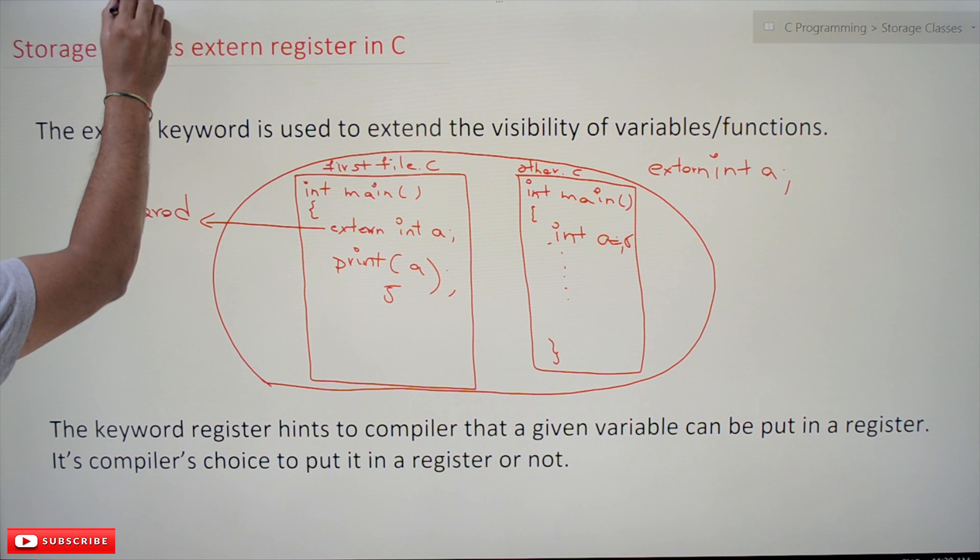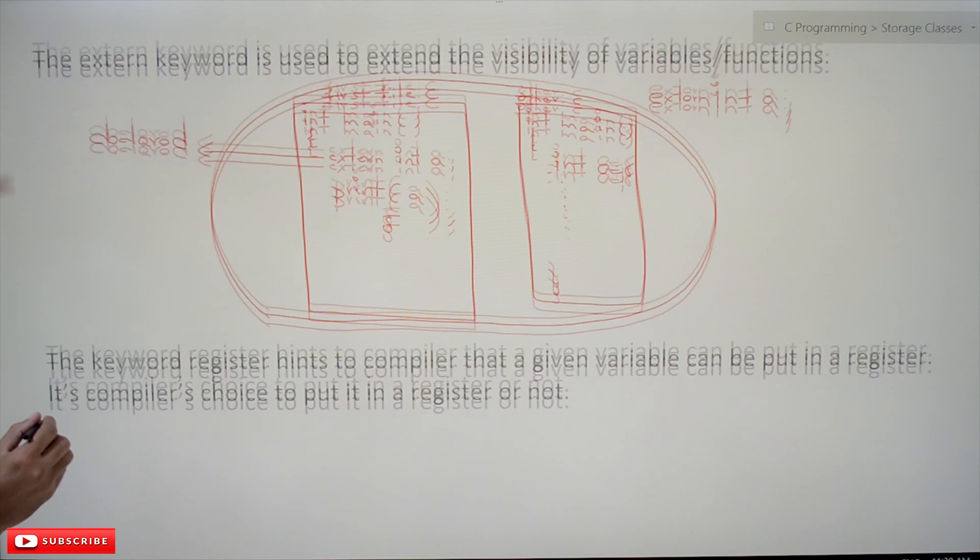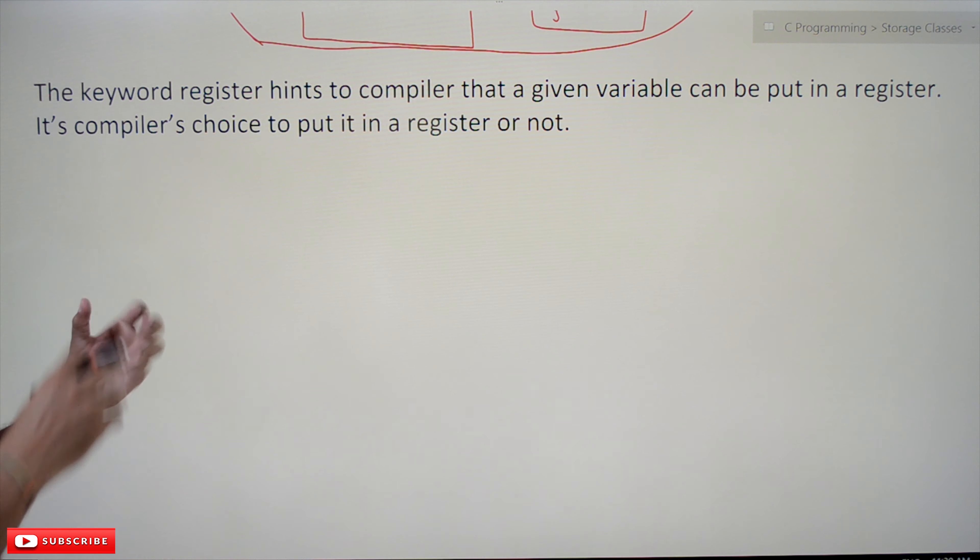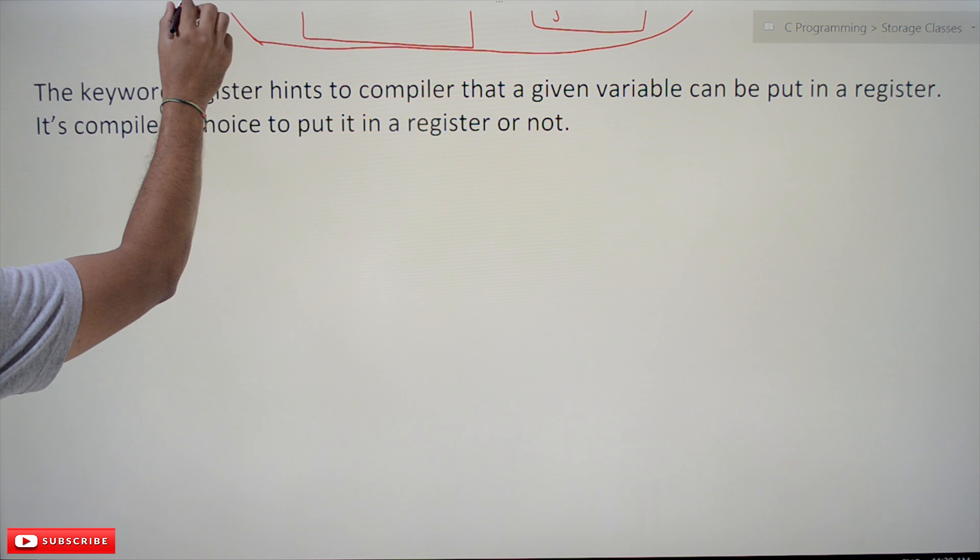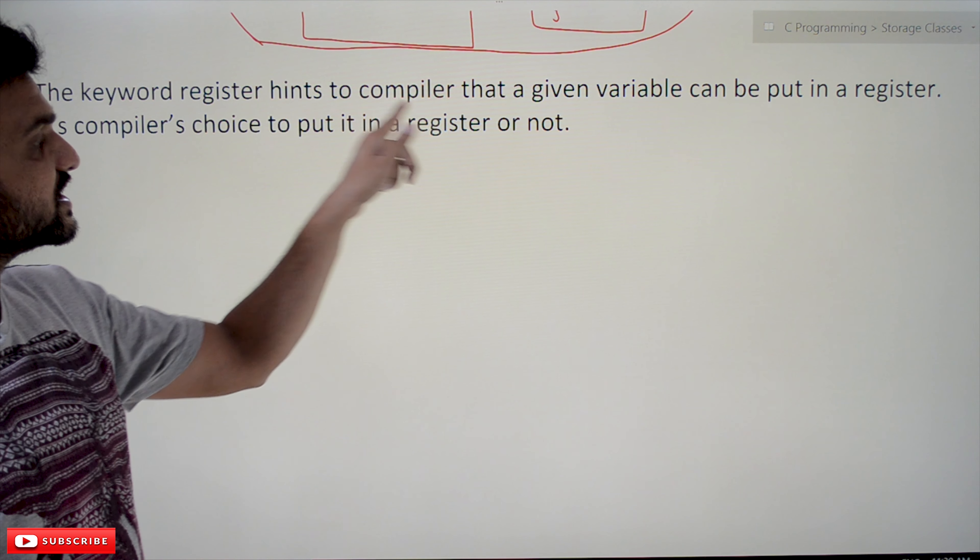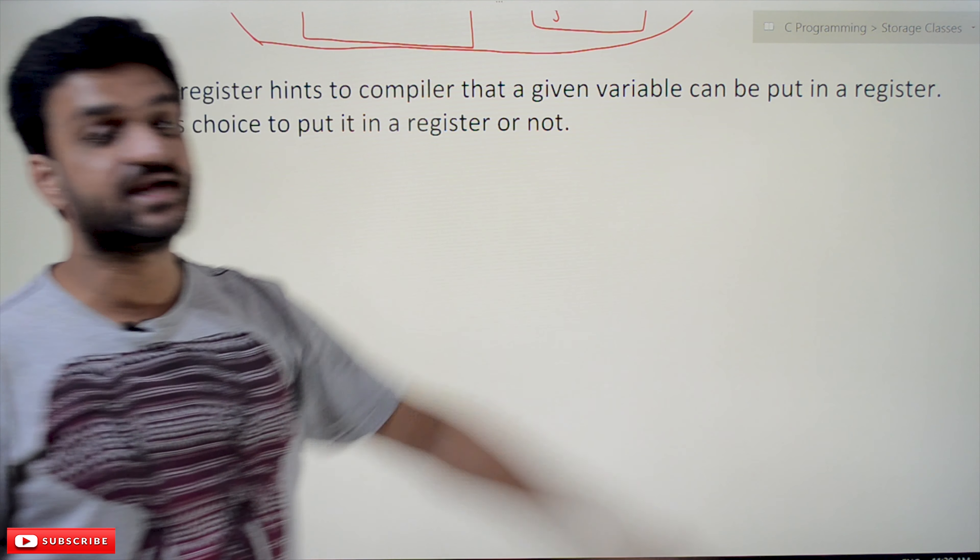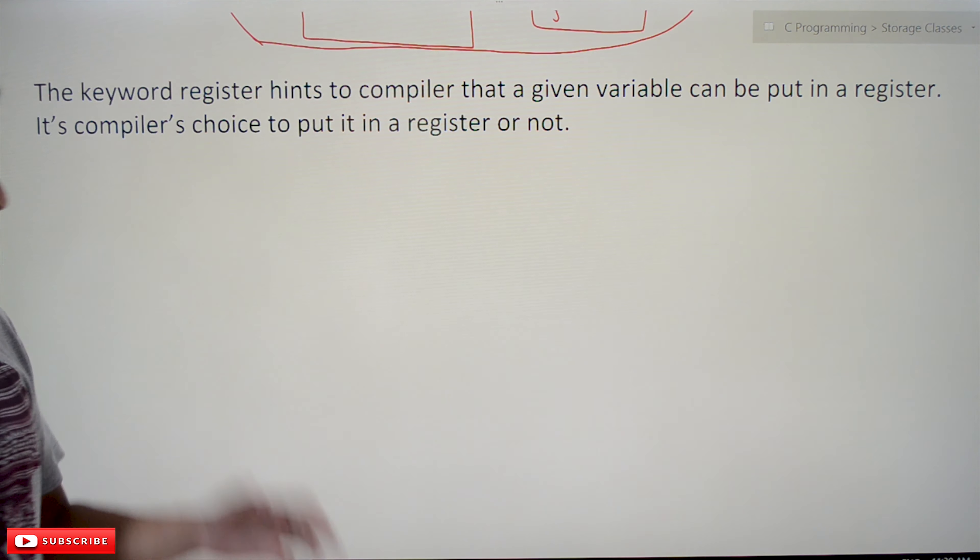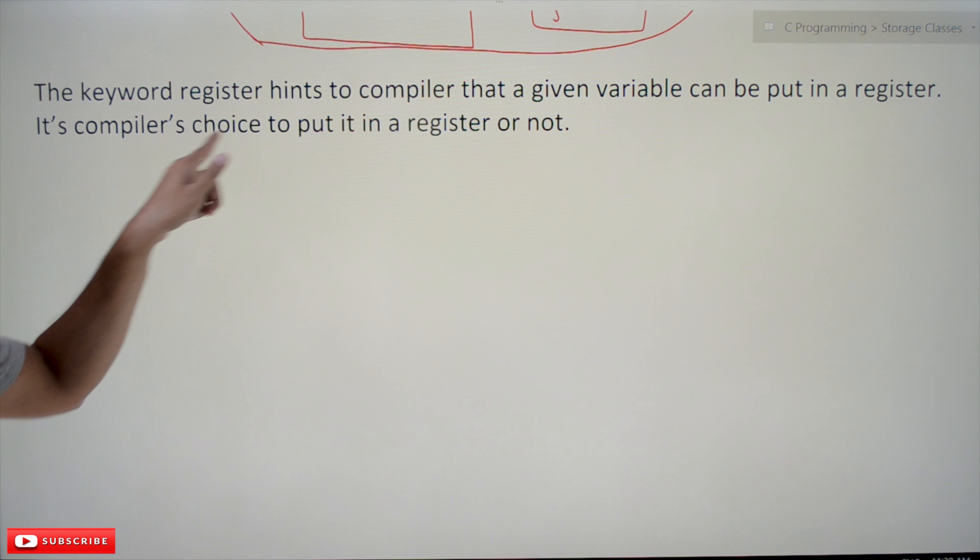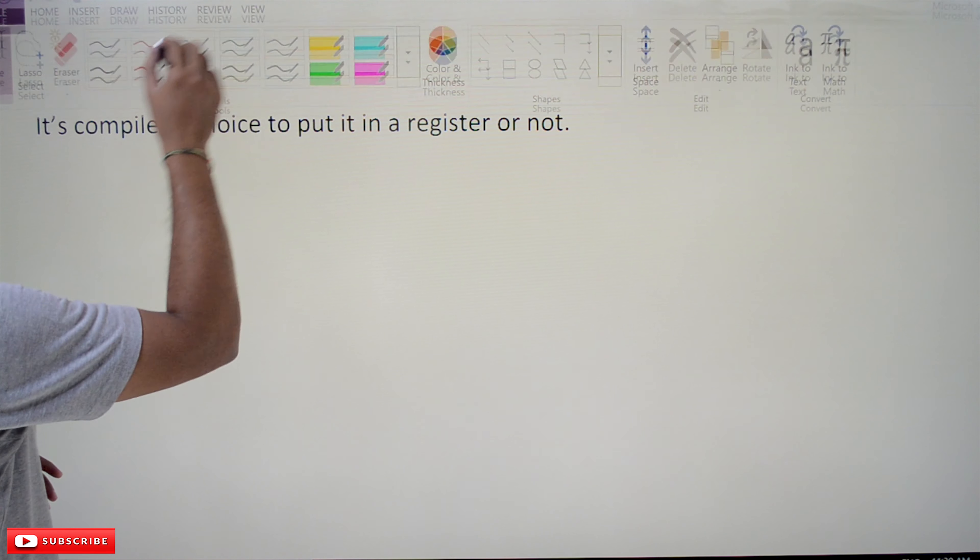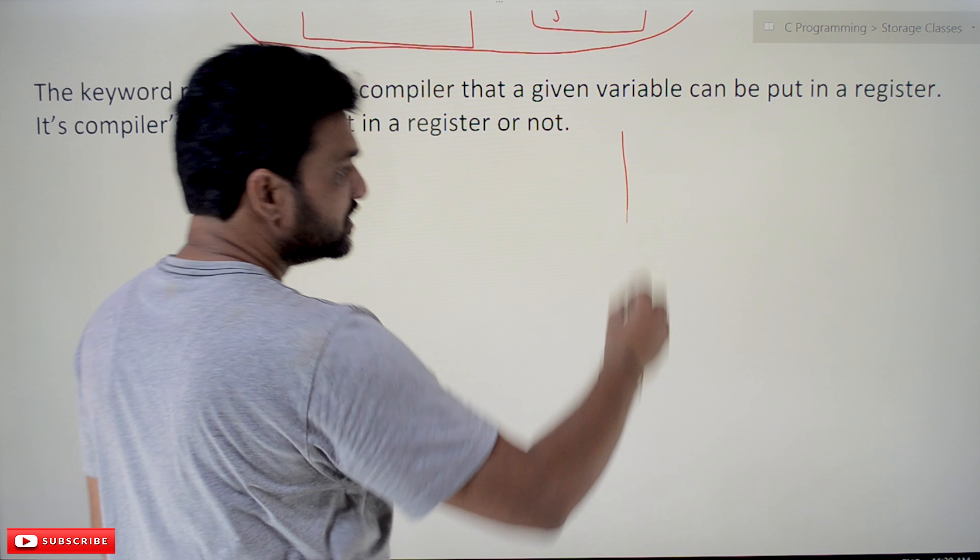The next one is register. This register is also not frequently used and it is not going to be supported in all the compilers or all the machines may not support this keyword, but it is there in C so we will discuss about it. The keyword register hints the compiler that a given variable can be put in a register. It's the compiler's choice to put it in register or not.